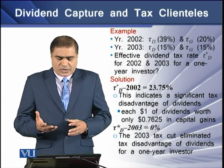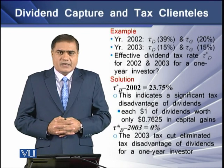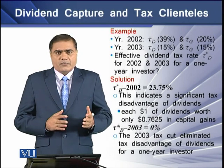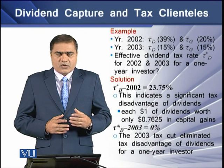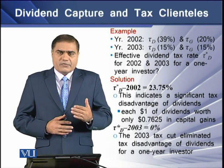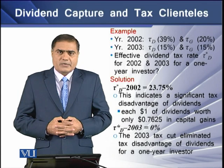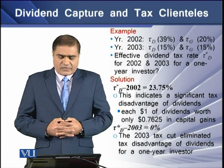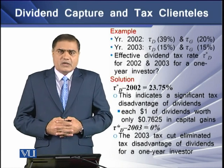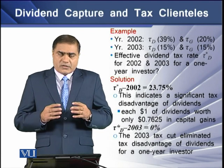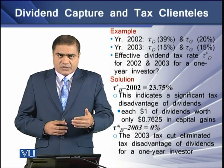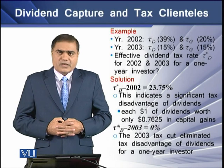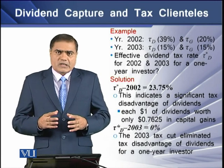For 2002, the effective tax rate is 23.75%, indicating a significant tax disadvantage for the shareholder receiving dividends. For each dollar of dividend, it is worth only $0.76 in capital gain received by that particular shareholder. For 2003, the effective tax rate on dividend is 0%, meaning the tax cut in 2003 has eliminated the tax disadvantage of dividends for a one-year investor.